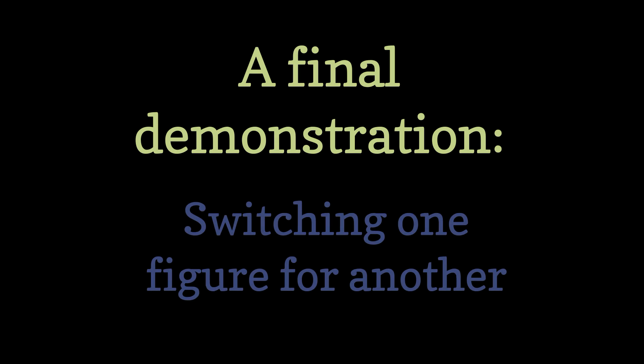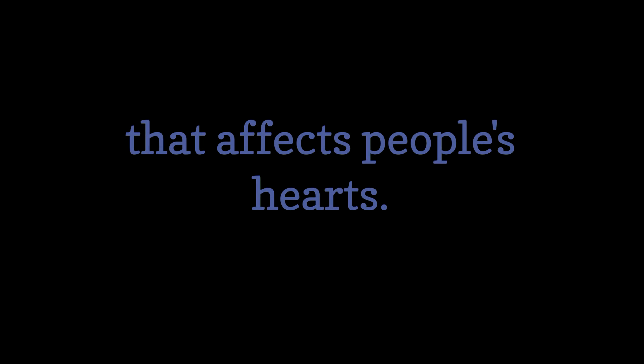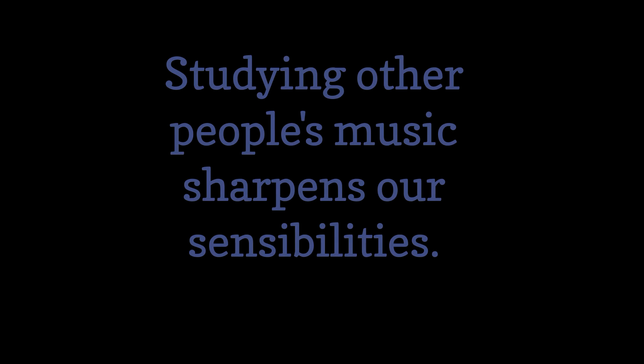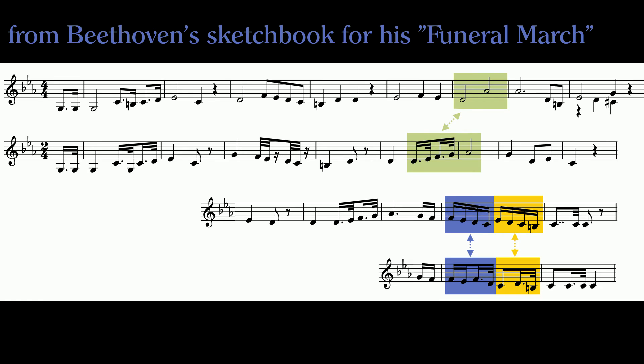The last thing I'd like to show you is that it's possible to switch out one figure for another. I've got to be honest — this is one of my favorite things to do when I study other people's music. Each figure represents a choice a composer makes, and his or her decision has a powerful effect on the song's emotional impact at each moment. For those of us who love music, listening to what could have been speaks to our minds and hearts about why the composer did what he or she did.